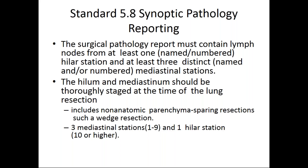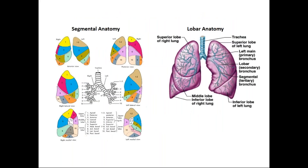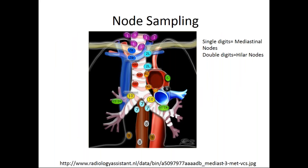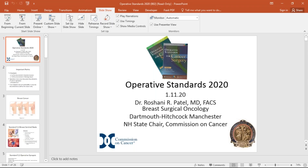This way, the hilum and mediastinum will be thoroughly staged at the time of lung resection. This includes wedge resection. The mediastinal stations are stations one through nine, and the hilar stations are station 10 or higher. These diagrams demonstrate the segmental and lobar anatomy of the lung and the different areas for nodal sampling.